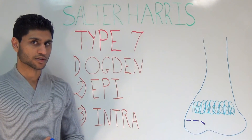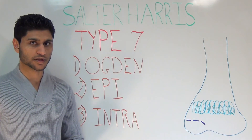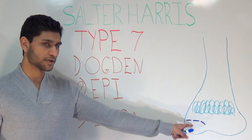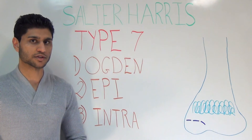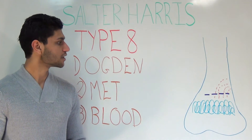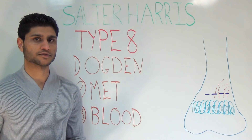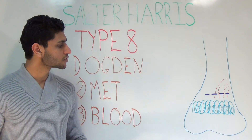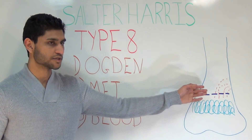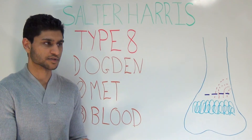The Ogden classification covers types 7, 8, and 9. What makes these unique is that the growth plate itself is not injured. In type 7, the injury occurs to the epiphysis — these may or may not be intra-articular. An Ogden type 8 is a fracture that occurs in the metaphysis. Since the blood supply enters from the diaphysis and the metaphysis, if the blood supply is disrupted by this fracture, then indirectly there may be some long-term growth disturbance to the epiphyseal plate.